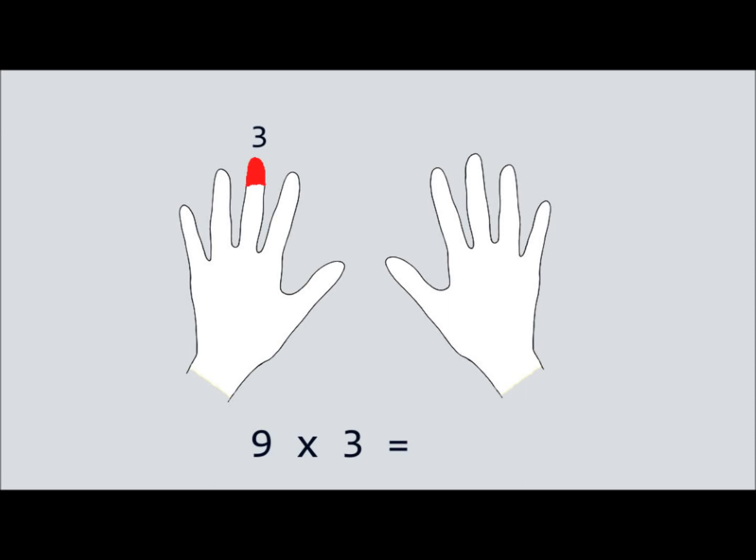Next, we'll count the number of fingers to the left of 3. There are 2, so we will put a 2 in the tens place. Now we will count how many fingers are to the right of 3. There are 7, so we put a 7 in the ones place. So our final answer is 27. It's that simple.